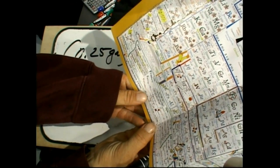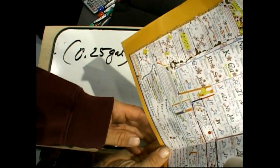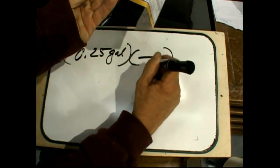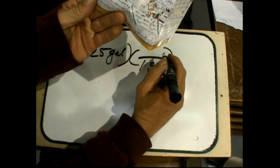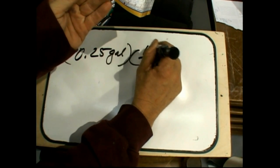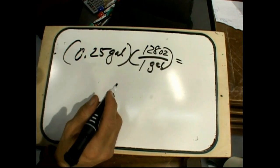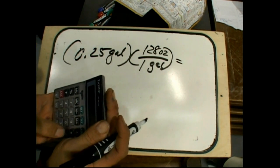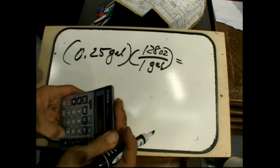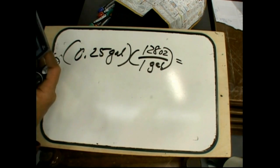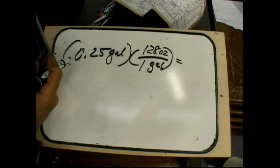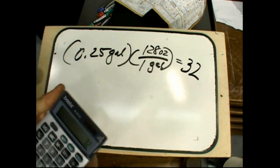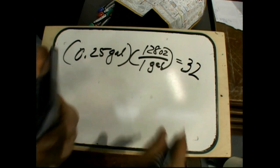We see that at one gallon, one gallon is, let's say, 128 ounces. So we would just multiply 0.25 times 128. It's going to equal 32. It's 32 ounces.